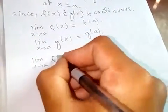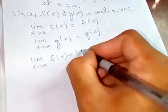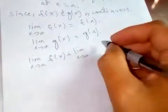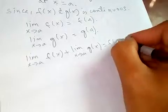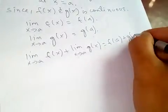Limit x tends to a f of x plus limit x tends to a g of x, which is f of a plus g of a.